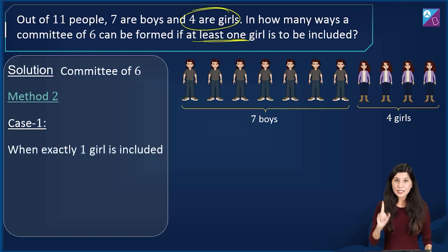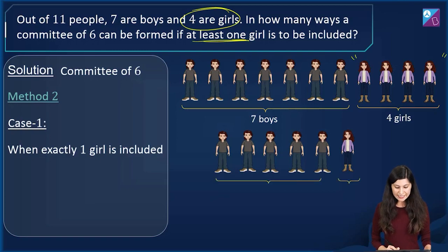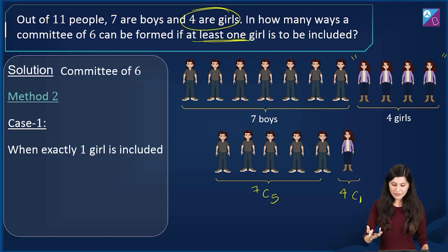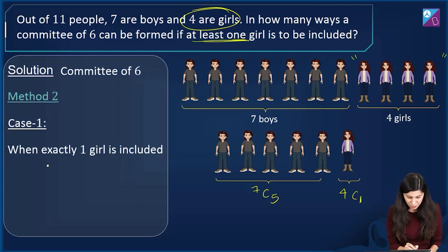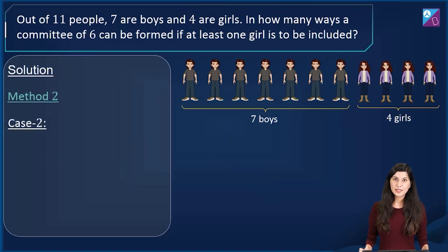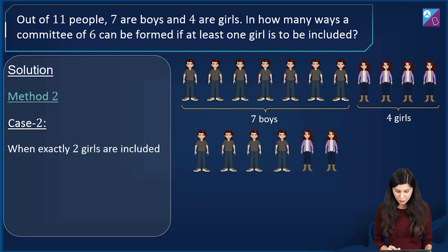Case one: when exactly one girl is included. I select one girl from four (4C1) and five boys from seven (7C5). The product gives case one's answer: 7C5 × 4C1. Case two: exactly two girls and four boys. That can be done in 4C2 × 7C4 ways, so the committee of six is formed.